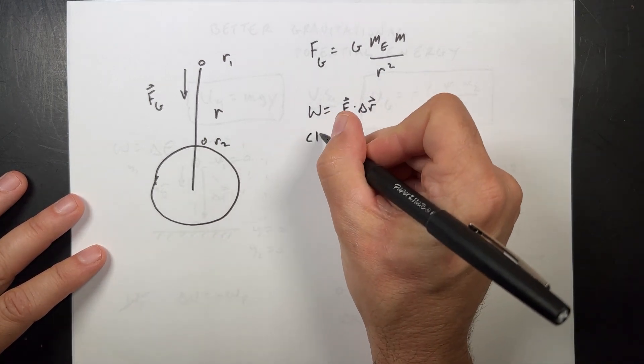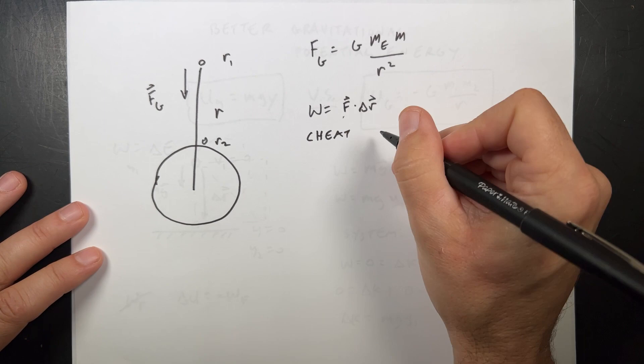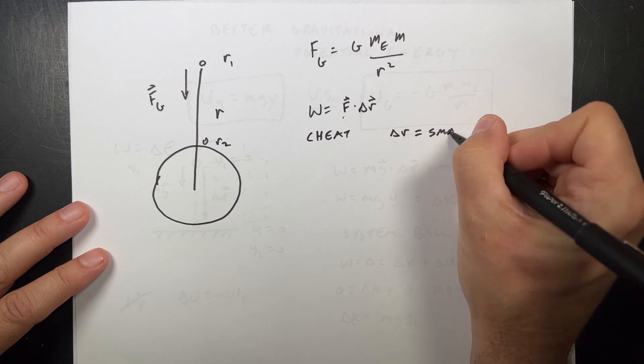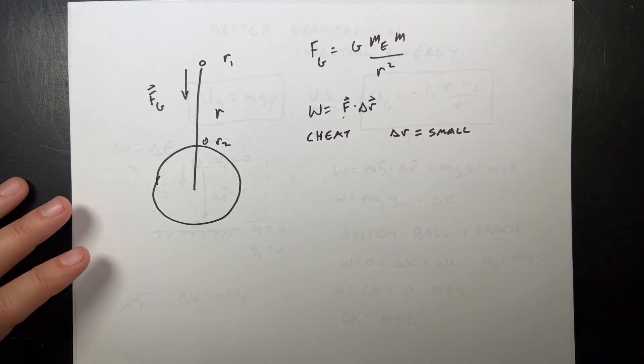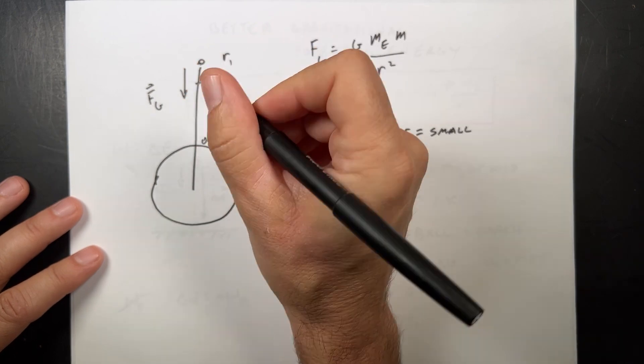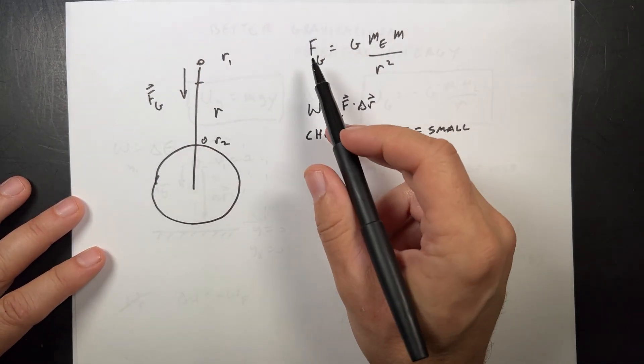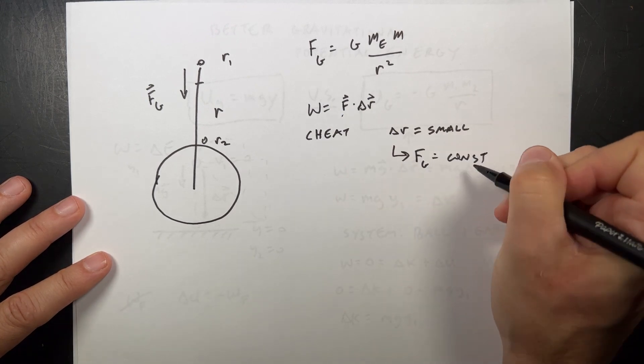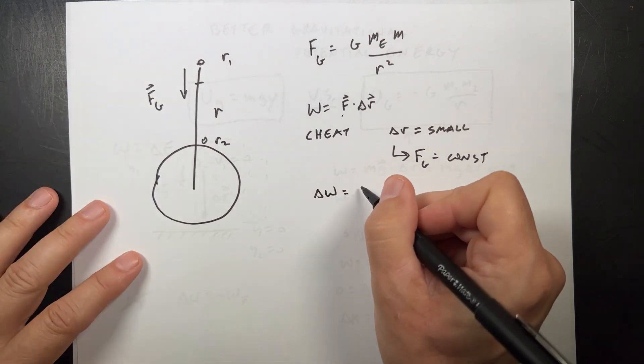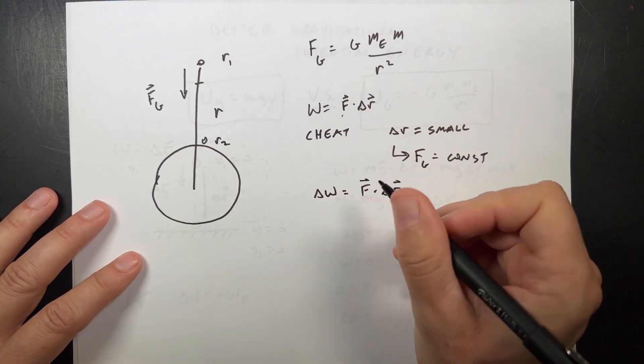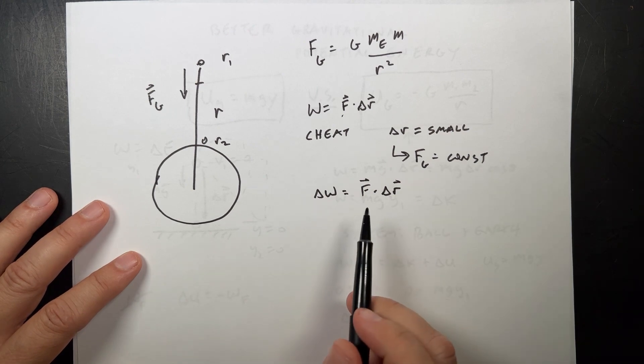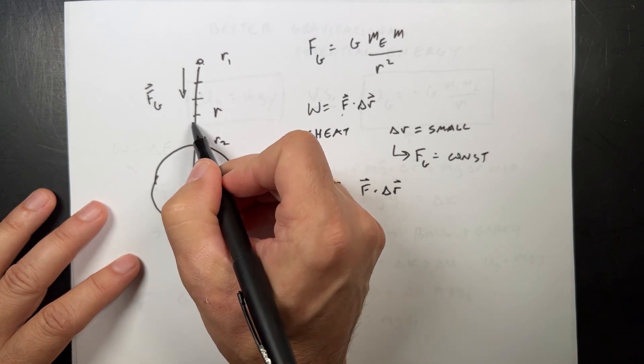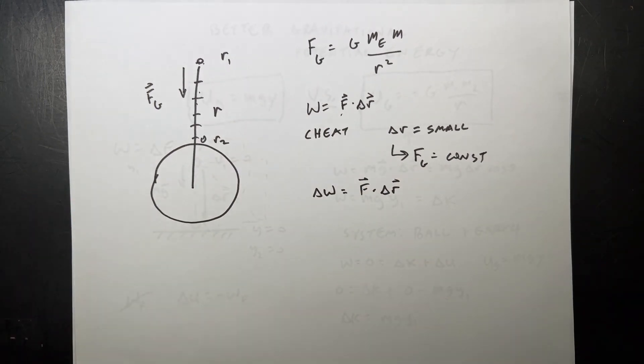As I move further, I can't do work equals F dot delta R because there's not one force - it gets stronger as it gets closer. So we're going to cheat. Let's say delta R - I'm going to use the scalar value - is small. If that's the case, then I can go from here to there. That's my delta R now, and this is kind of constant. If delta R is small, then F_g equals constant. So I can calculate delta work - the work done over that is just F dot delta R. I can do it if the delta R is small. But then if I want to go from R1 to R2, I have to do that again. I'll have to break this into a whole bunch of little pieces and then add up all the works going down. And that's what we're going to do.